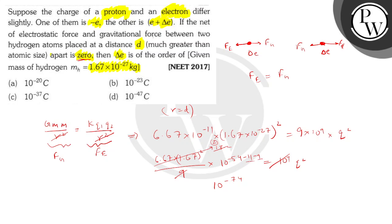Right? Because -11 - 9 will become -20. -54 - 20 will be 10^-74. This is equal to Q².